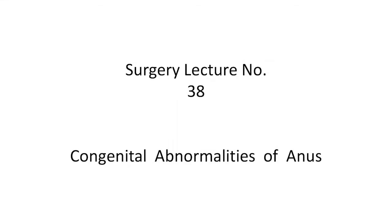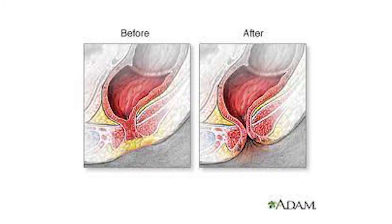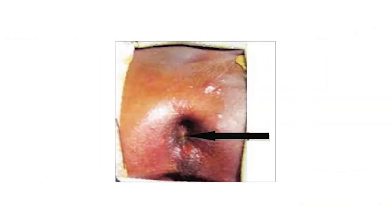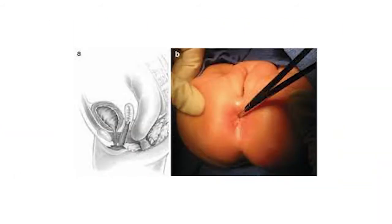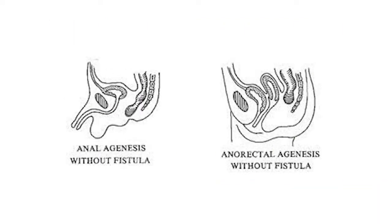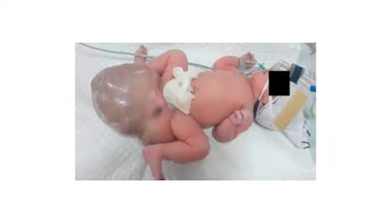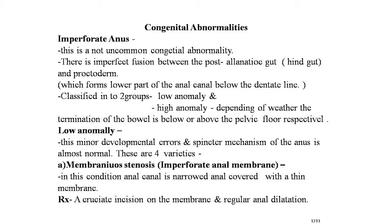Welcome dear students to my surgery lecture number 38, that is the congenital abnormalities of the anus. In this lecture we will learn the imperforate anus, low anomalies like membranous stenosis, imperforate anal membrane, covered anus, stenosed anus, ectopic anus, and high anomalies like rectal atresia, anorectal agenesis, and cloaca, along with sacrococcygeal teratoma and post-anal dermoid.